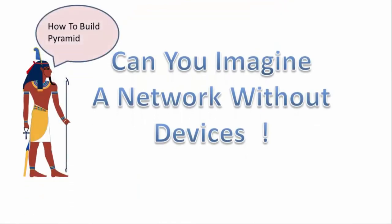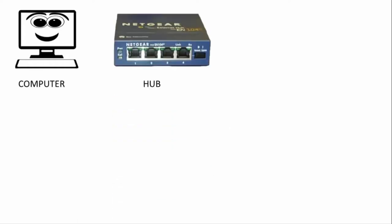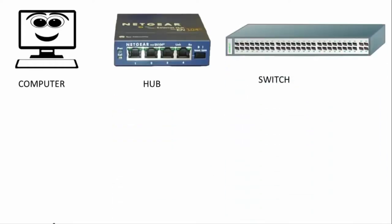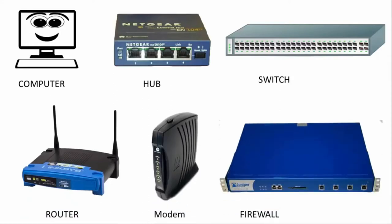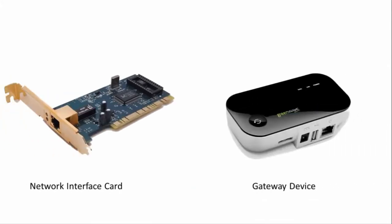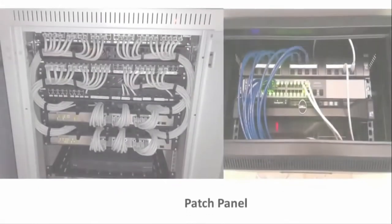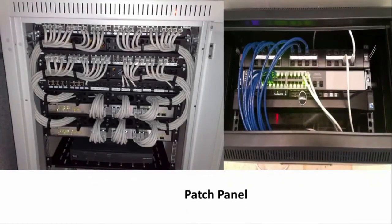As we know, we can't imagine a network without devices. In the modern world, some of the network devices include computers, hubs, switches — which you have generally seen around your home — routers, modems, firewalls, network interface cards, gateway devices, and patch panels. More of these devices are used in the corporate world.